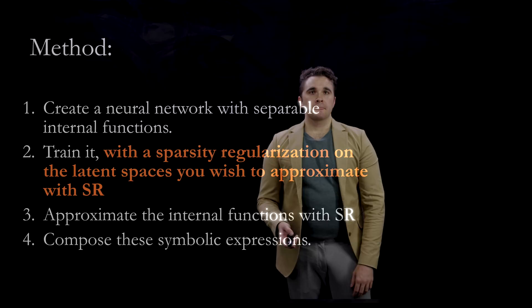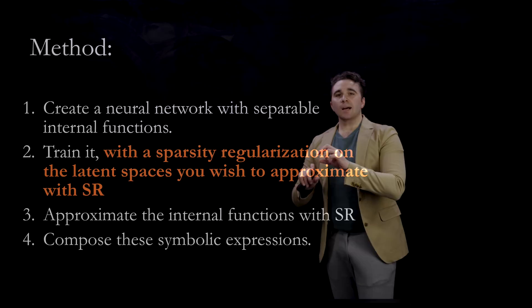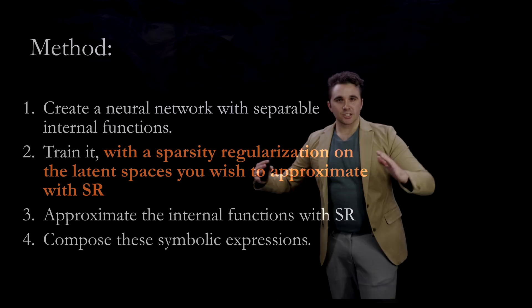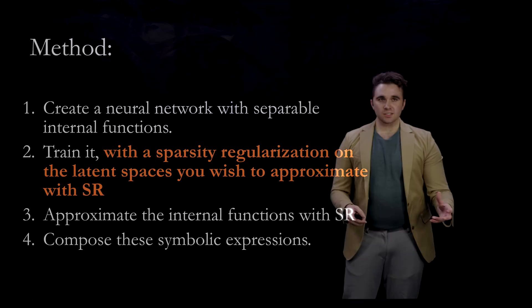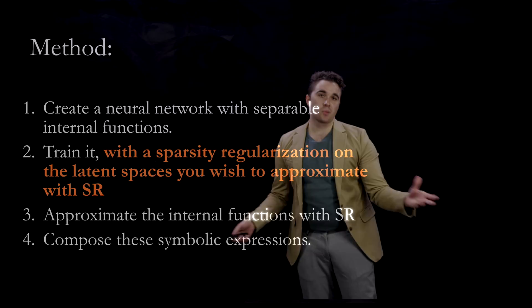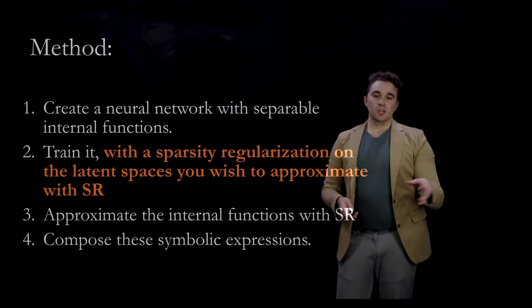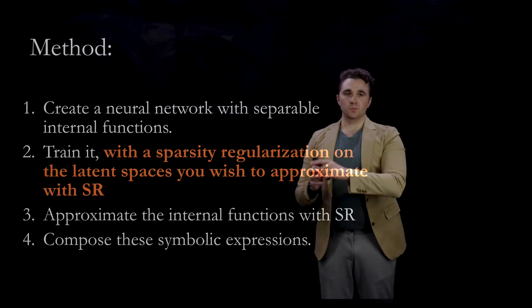Another way of seeing the method: design a neural network with separable internal functions and smaller latent spaces, train it with sparsity regularization on the latent spaces, then approximate those internal functions with symbolic regression. You then compose those symbolic expressions using the internal structure — if you have sum pools inside your network, you have those sum pools inside the extracted equation too — leaving you with a symbolic model equivalent to your neural network.